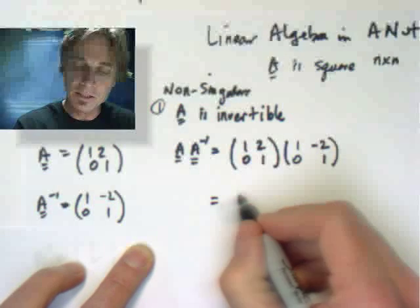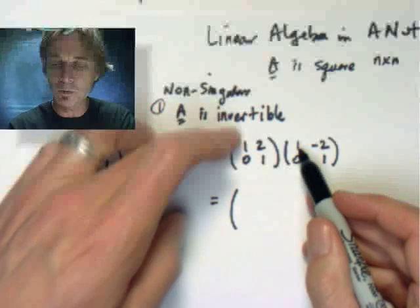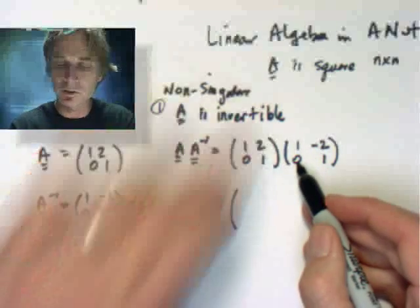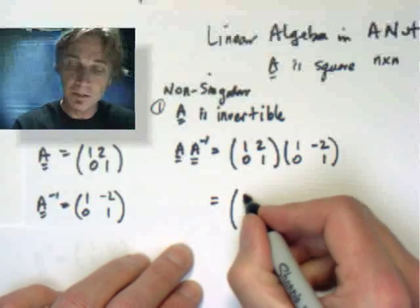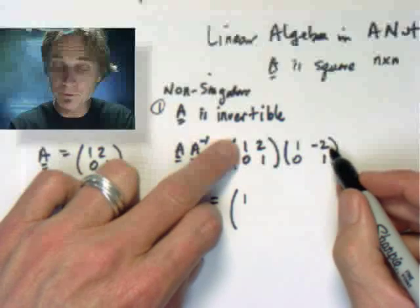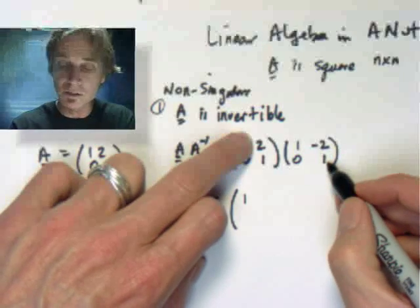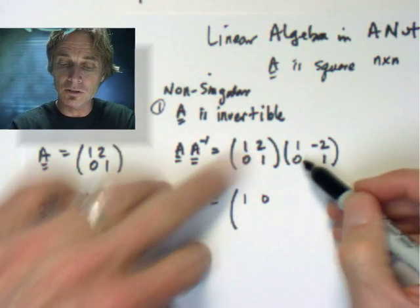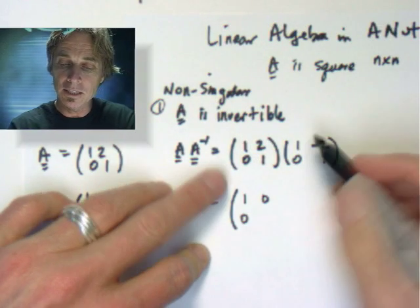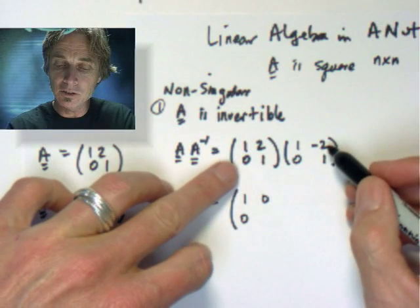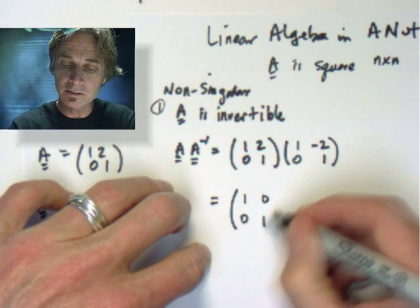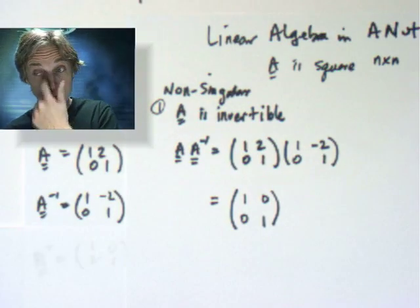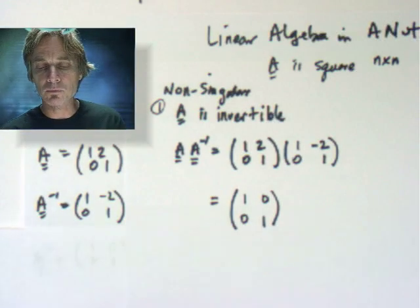And I'm going to check that, see what the answer is. So I'm going to have one times one plus two times zero is one in the upper left. One times negative two is negative two plus two times one is zero in the upper right. One times zero plus one times zero is going to be zero in the lower left. And negative two times zero plus one times one is one in the lower right.